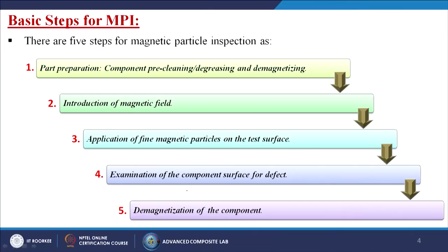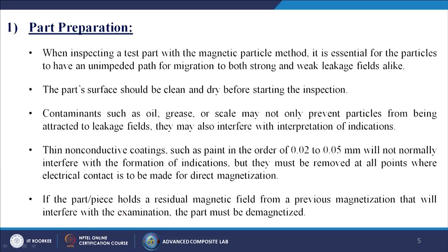The second step is the introduction of the magnetic field. The third is the application of fine magnetic particles on the test surface. The fourth is the examination of the component surface for defects. The fifth step — because we are creating a magnetic field or magnetic flux inside the material — after examining, we need to demagnetize the component again. We will now discuss all five points in detail.